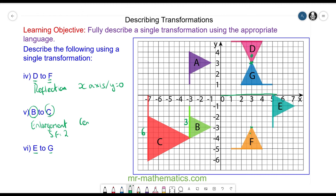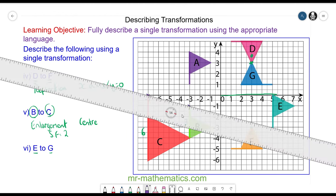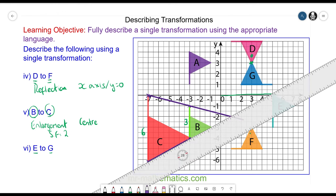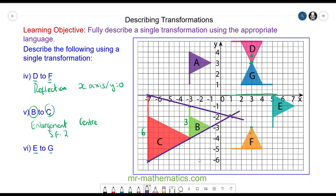And the centre we need to find using rays which I will go from this vertex and this vertex and this vertex. And then from this vertex and this vertex. And the second ray. And you can see the two rays intersect at the centre which is at 1 and negative 2.